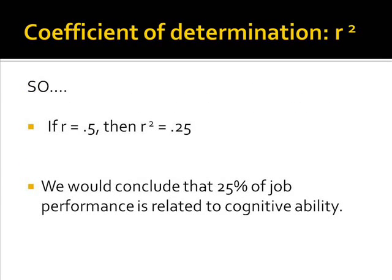So, if the correlation coefficient is equal to 0.5, then r squared is equal to 0.25. So 25% of the variability in job performance is explained by your knowledge of an employee's cognitive ability.